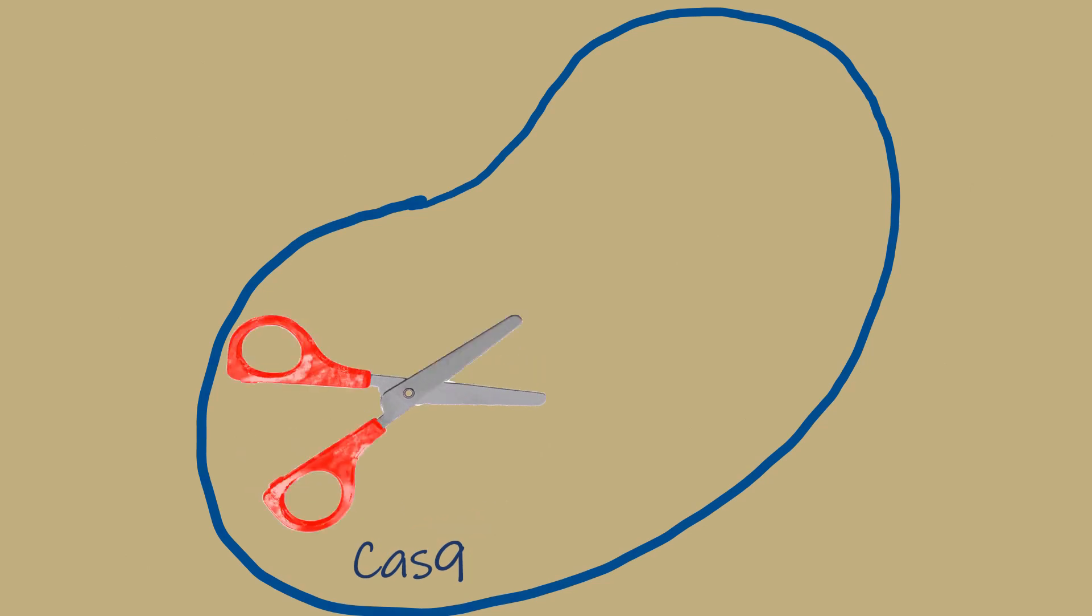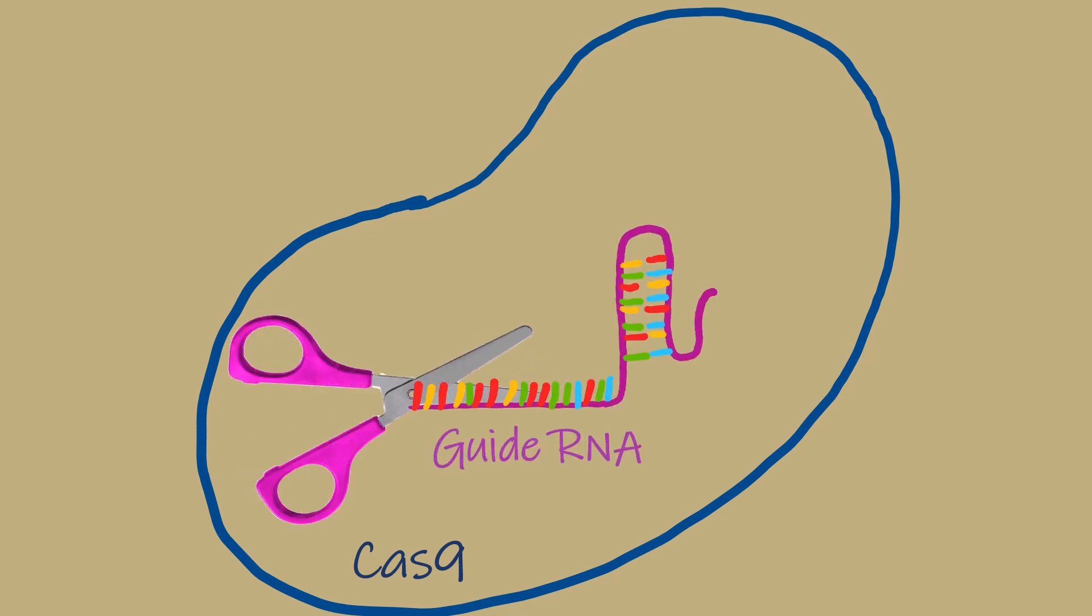The Cas9 protein is a nuclease, a molecular scissor that can cleave nucleotide sequences. The guide RNA, as the name suggests, guides the Cas9 protein to make a specific cut. This guide RNA can bind to a complementary DNA sequence after which the Cas9 nuclease makes the cut. We will look at the mechanism later.